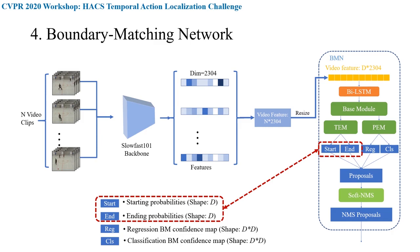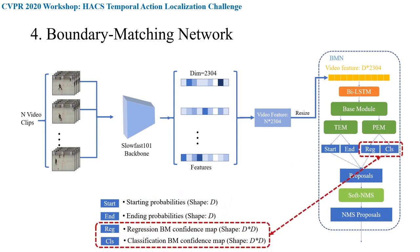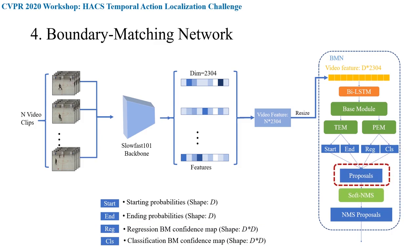The PEM module generates two boundary matching confidence maps of shape D×D. Using the proposal boundaries generated by TEM, we can find the confidence of the proposals in this D×D map, completing the output of these proposals.